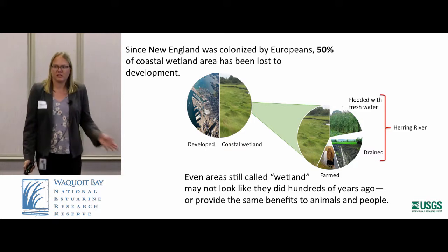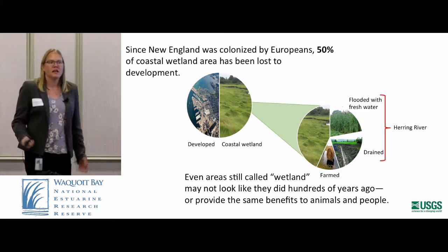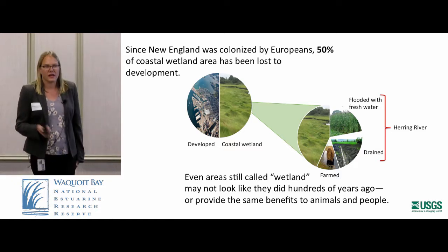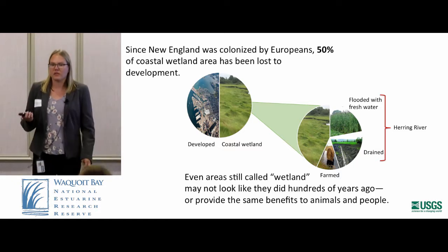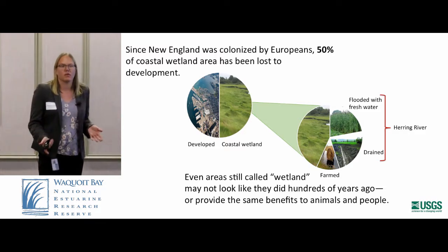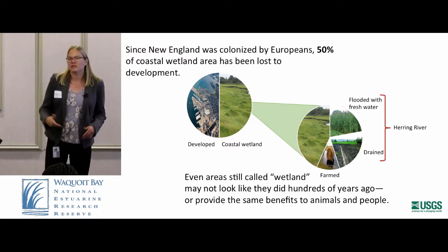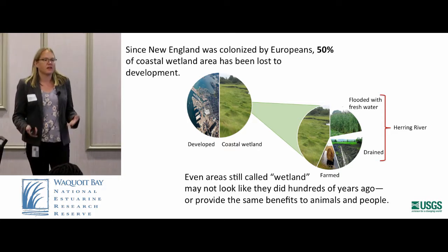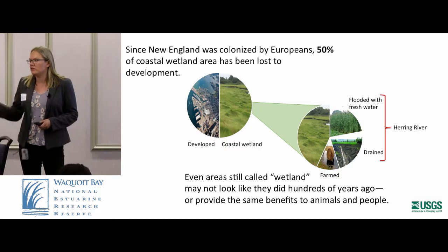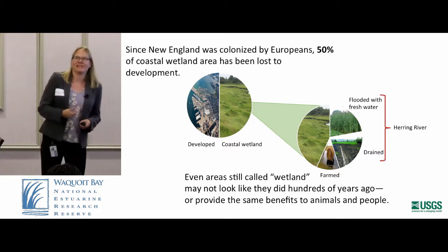In the Northeast, and in a lot of different places across the US, we've lost a lot of our wetlands. We have about 50% of what we had in pre-colonial times, but what we consider wetlands now actually has a lot of different characteristics. It's not necessarily the really beautiful salt marshes that you see pictures of and that we like to show in our presentations.